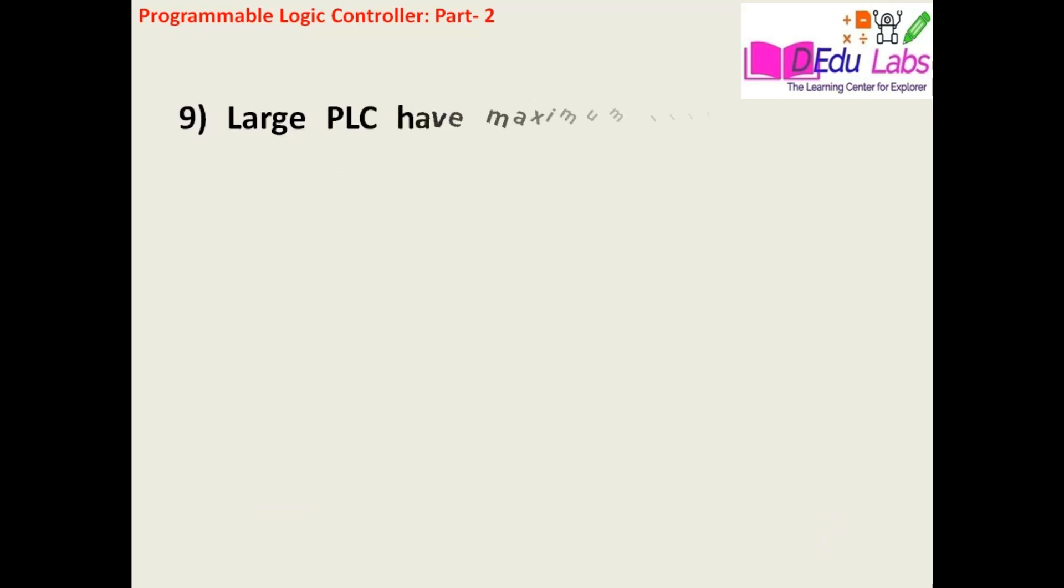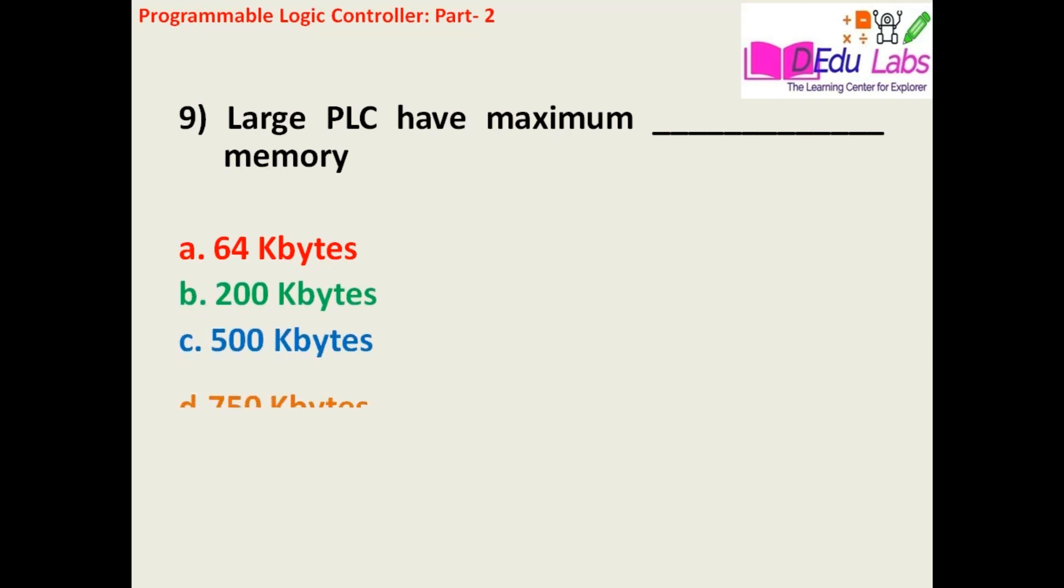Question number nine: The large PLC have maximum blank memory. Option A: 64 kilobytes, Option B: 200 kilobytes, Option C: 500 kilobytes, Option D: 750 kilobytes.